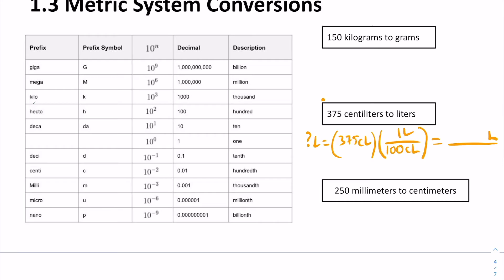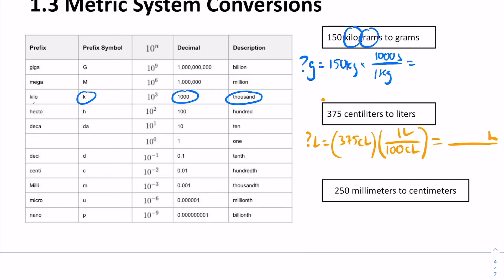If we want to do conversions, our steps for solving metric system conversions are: always write out what we want to know, then look up our table with our prefixes. For example, we want to find grams and we know we have 150 kilograms. We write that out, then write our conversion factor. Kilo means 1,000, so 1 kilogram equals 1,000 grams. Applying dimensional analysis, kilograms cancel, and we're left with 150,000 grams.